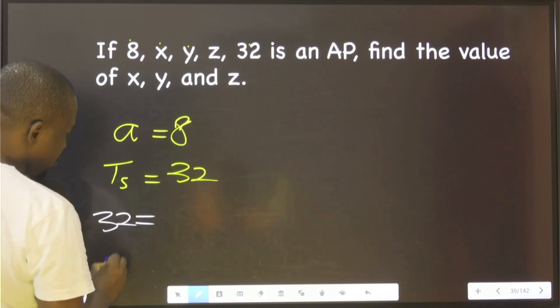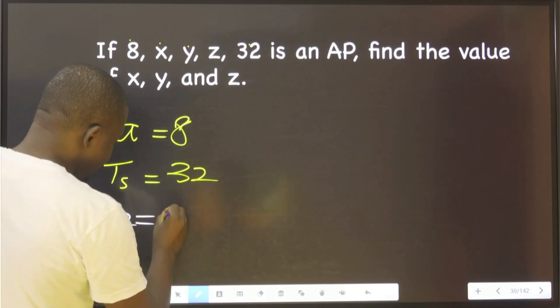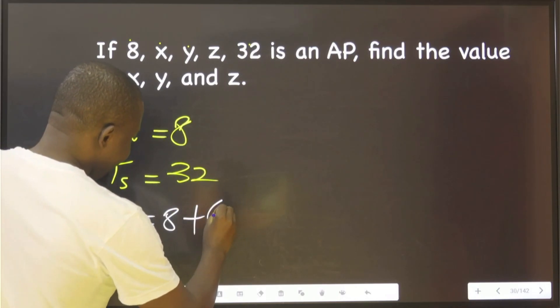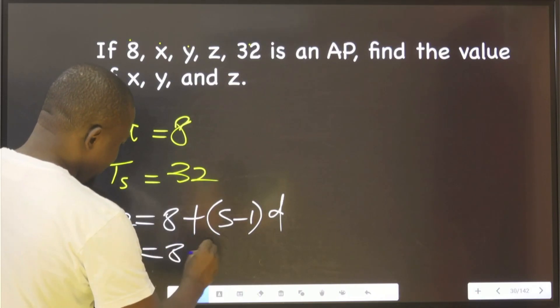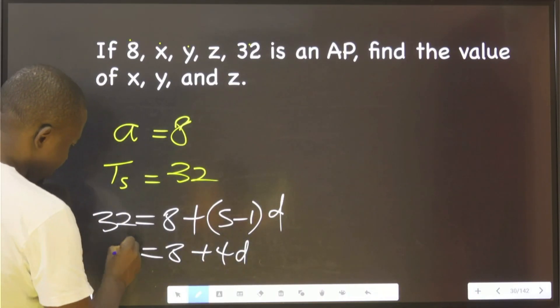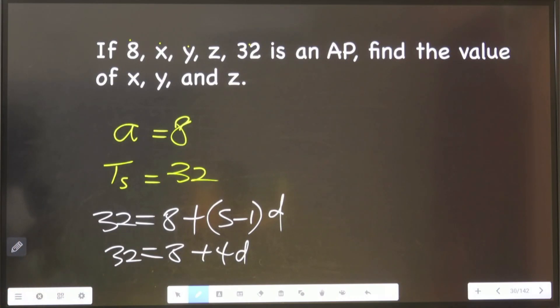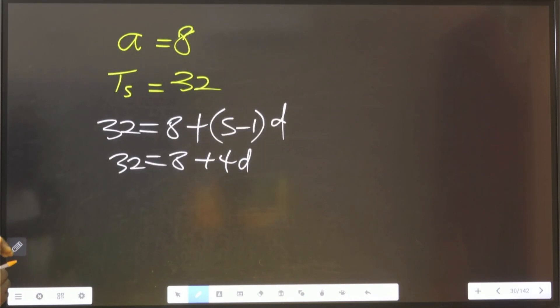32 is equal to the first term, which is 8, plus 5 minus 1, we put d here, which is 8 plus 4d. So 32 equals 8 plus 4d.